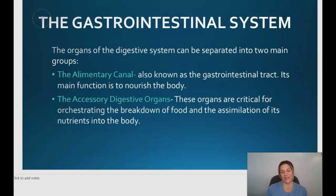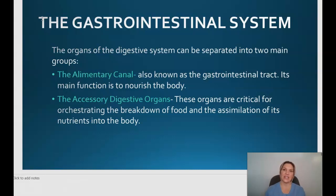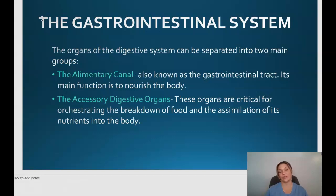The organs of the digestive system can be separated into two main groups. First, we have the alimentary canal, also known as the gastrointestinal tract, whose main function is to nourish the body. Then we have the accessory digestive organs, which are critical for orchestrating the breakdown of food and the assimilation of its nutrients into the body.